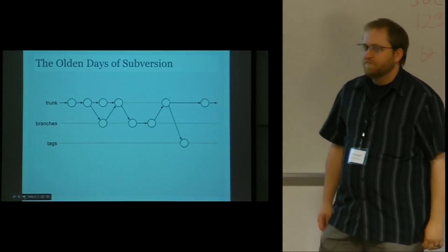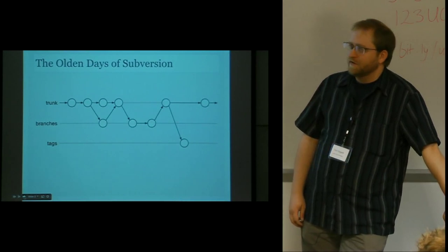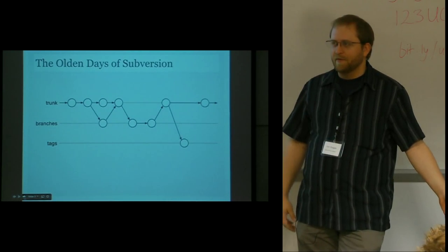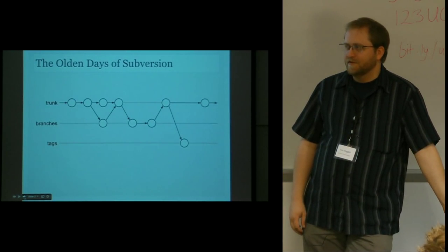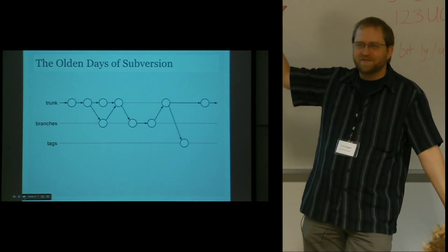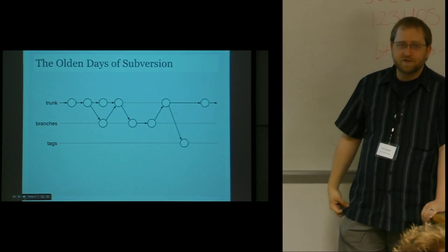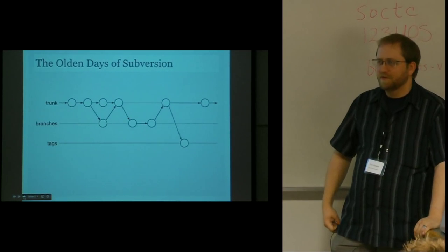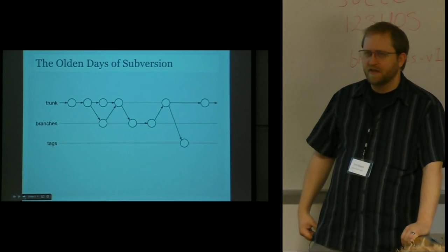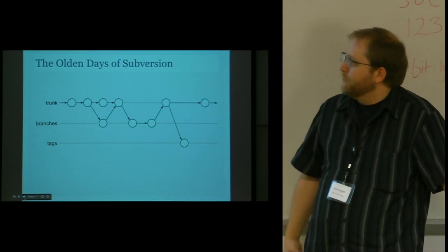To start off with, if you've been developing as long as most of us, we have the olden days of source control. If anyone here isn't using some form of source control, you probably should. I'd recommend Git. We have the olden days of subversion. One of the things I really liked about subversion was that it was very orderly. It was a pain to set up in terms of branching, but at least you had a very standardized way of approaching things that you could expect with pretty much everybody's repository.